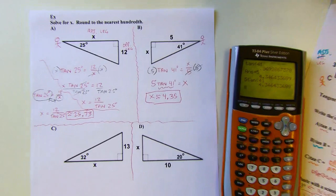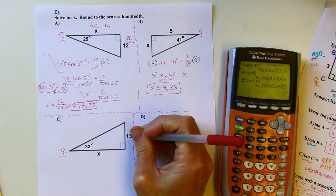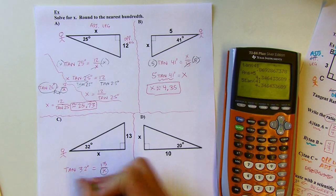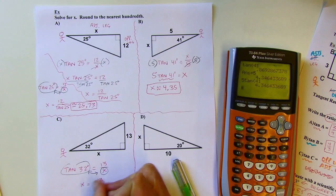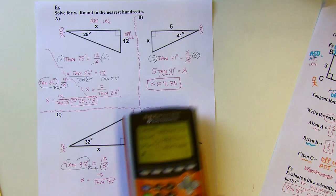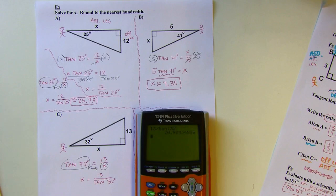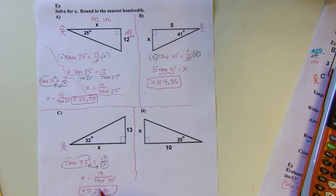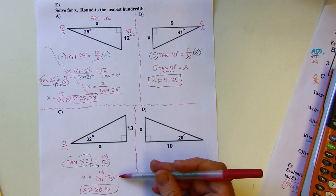Next, I'm at the 32-degree angle. Opposite would be 13, adjacent is x. So tangent of 32 degrees equals 13 over x. This would be a good time for the Incredible Switch because I have that variable on the bottom — so x equals 13 over the tangent of 32 degrees. Type it in: 13 divided by tangent of 32 degrees gives about 20.80. If your teacher asks for the exact value, it's 13 over the tangent of 32 degrees — I can't simplify that further without a calculator.